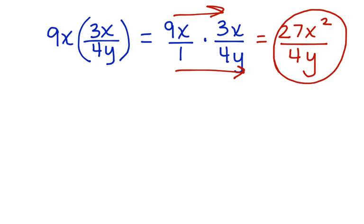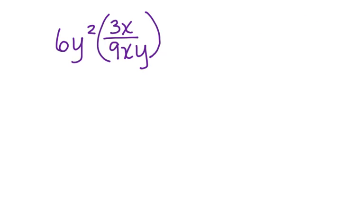Let's look at another example. Here we have 6y squared times 3x divided by 9xy. Again,